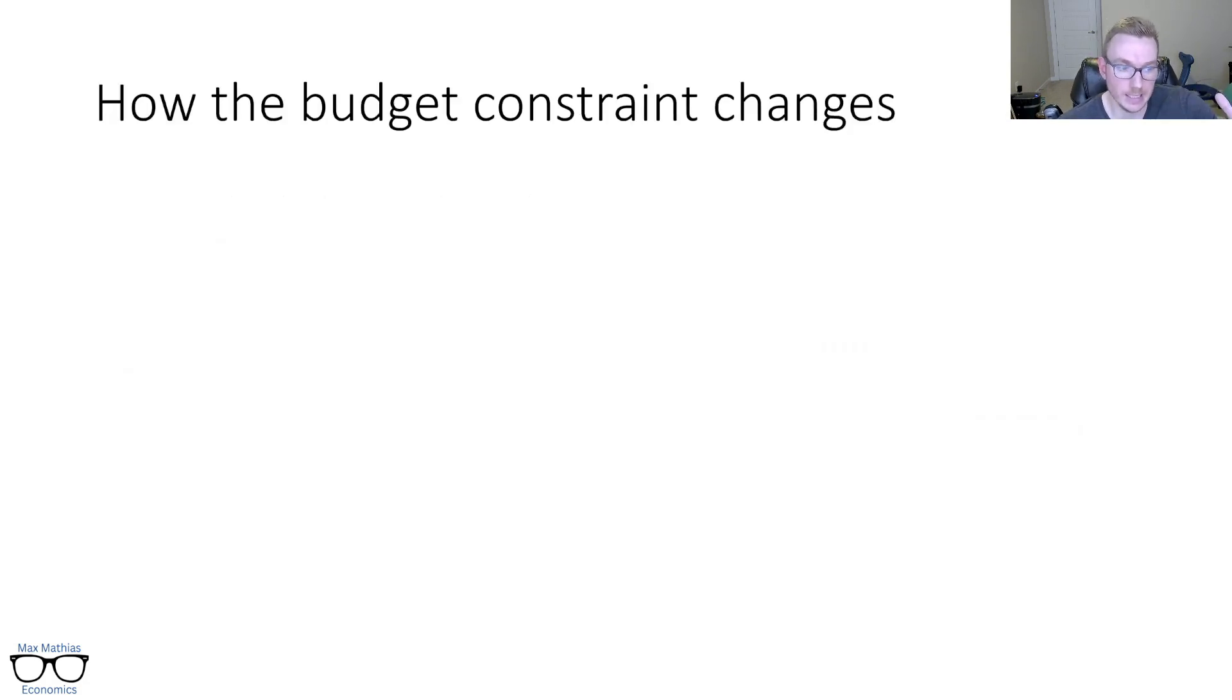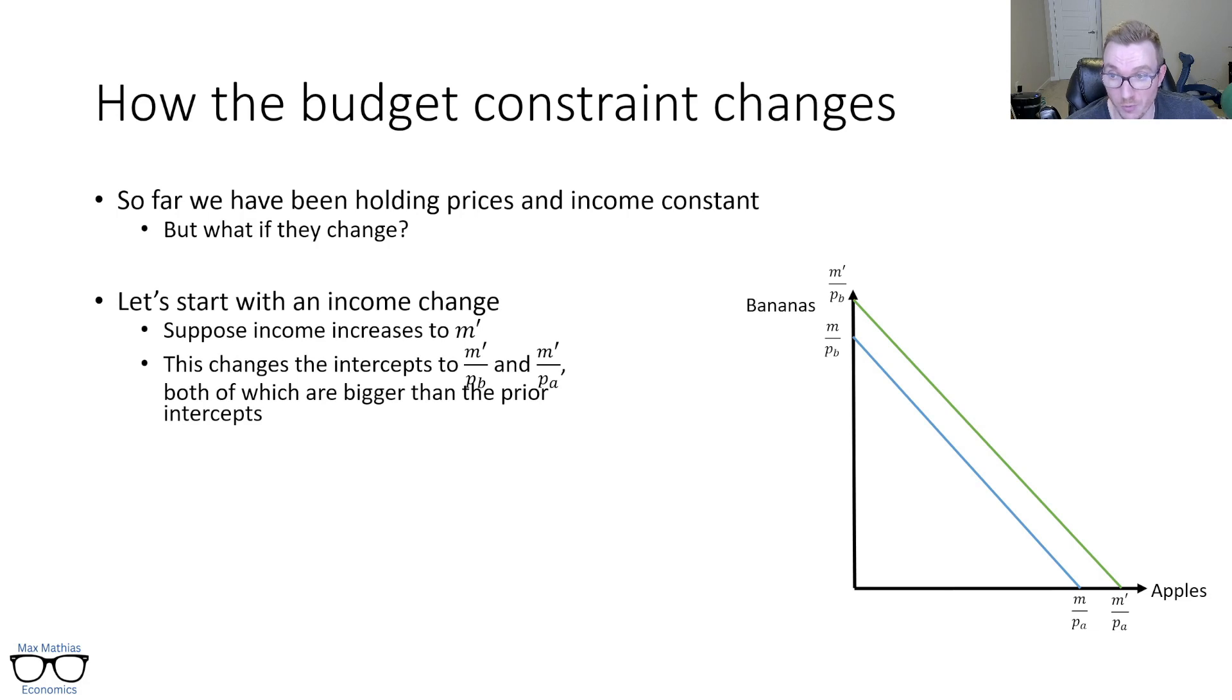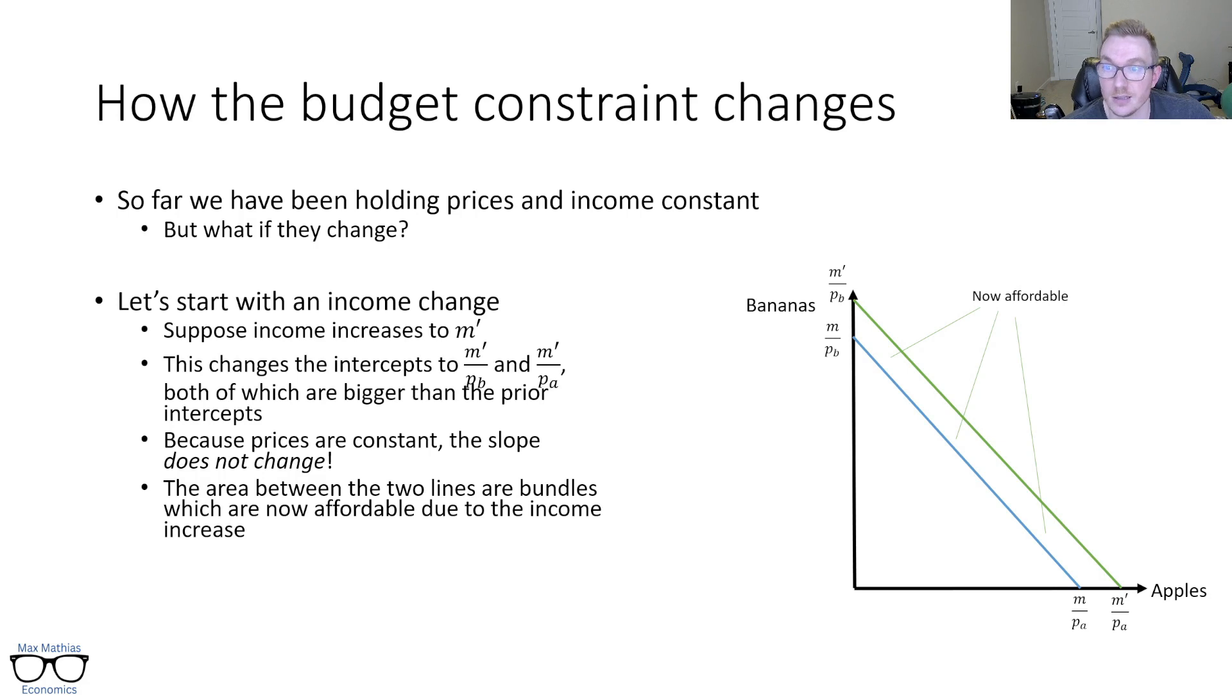So, so far we've been holding income and prices constant. What if they change and how does that affect the budget constraint? So this is our graph that we've had for the past couple slides. I'm holding income constant and I'm holding the price of apples and the price of bananas constant. What if I let those change? So let's start with an income change. So let's say for some reason I get some more money, income increases to M prime. If you look at the graph, how does that change what the graph looks like? Well, what I'm noticing is that those intercepts now increase. It's now M prime over P_B and M prime over P_A. Sorry, there shouldn't be a prime there. Both of which are bigger than the prior intercepts. So we get something that looks like that. It's a parallel shift of the line. I can now buy more than I could before. And prices are constant. The slope isn't changing. The area between the blue line and the green line are bundles that were not affordable because my income wasn't big enough to now they are because my income is increased.